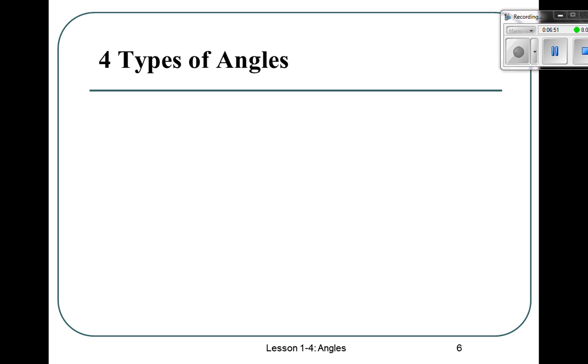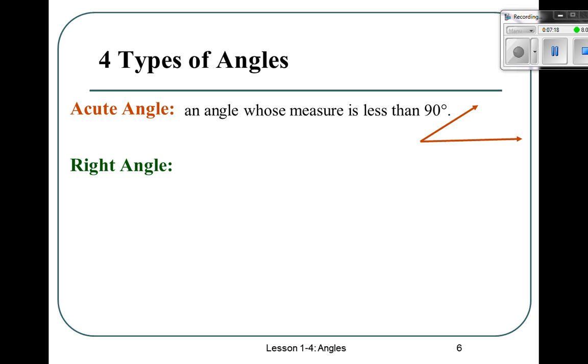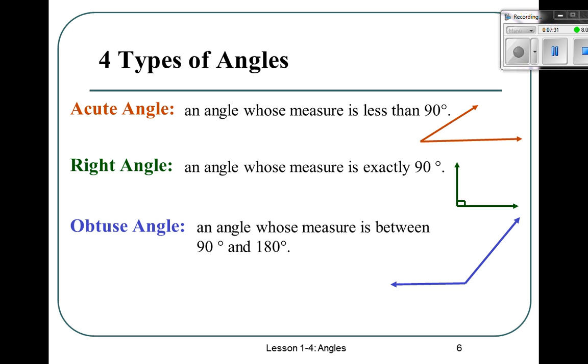There are four types of angles. You should know this from fourth grade. If you don't, this is a good reminder. Acute angle: an angle whose measure is less than 90. A right angle: an angle whose measure is exactly 90. And an obtuse angle: an angle whose measure is between 90 and 180. The last one is a straight angle, which has exactly 180 degrees.